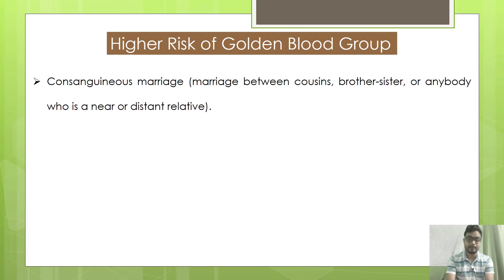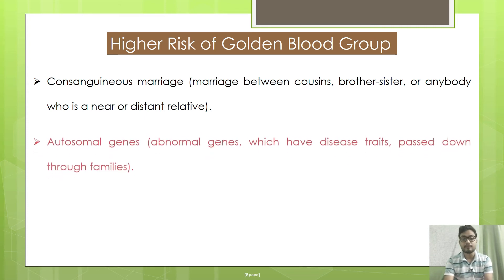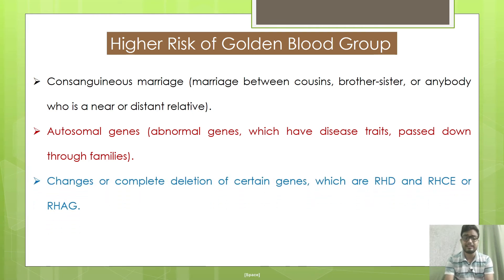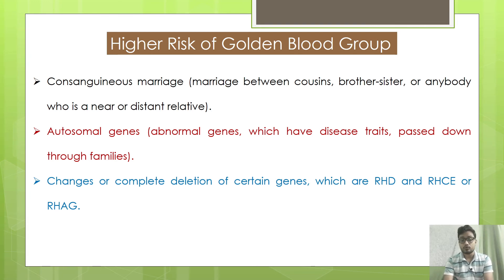What is the high risk of the golden blood group? Consanguineous marriage — marriage occurring between family members such as cousins, or near or distant relatives — leads to a high risk of Rh null blood. Another reason is autosomal genes, which are abnormal genes that carry disease traits and pass down through families. Genetic disorders involving mutations of the RHD, RHCE, or RHAG genes can lead to the golden blood phenotype.